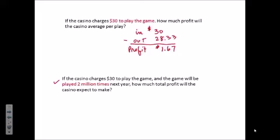Finally, if the casino charges $30 to play, and the game will be played 2 million times next year, how much total profit will the casino expect to make? Well, it's making $1.67 per play times 2 million plays. That would give $3.34 million of total profit. Of course, it won't be exactly $3.34 million. That will depend upon whether the players were lucky or not. So this depends upon chance, but it would be about $3.34 million.